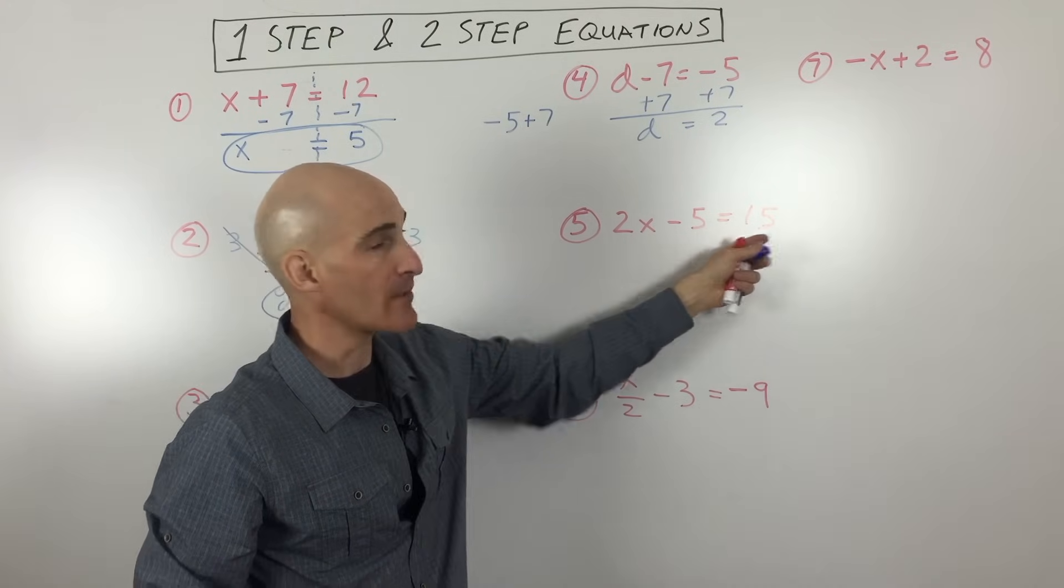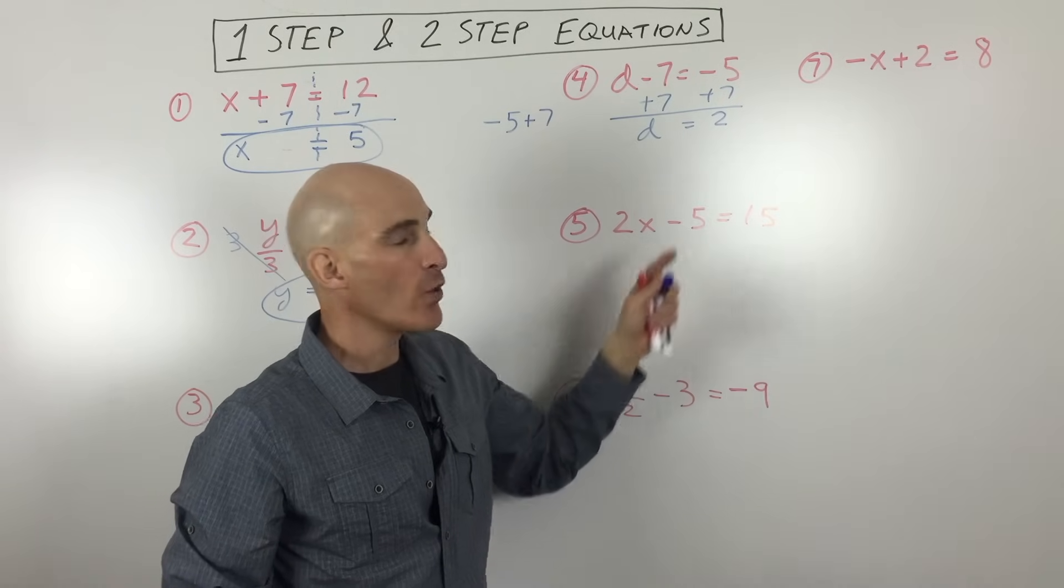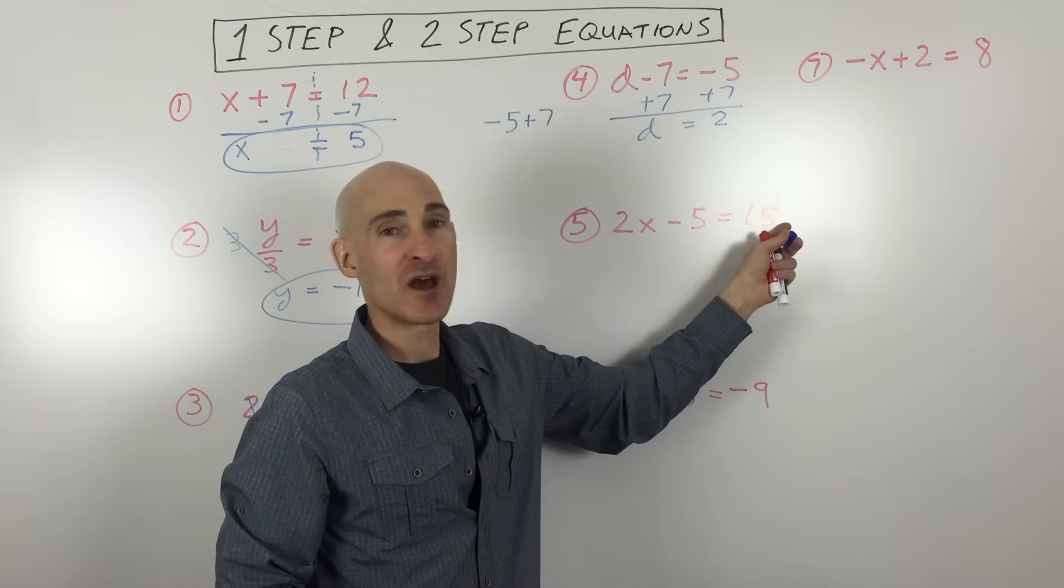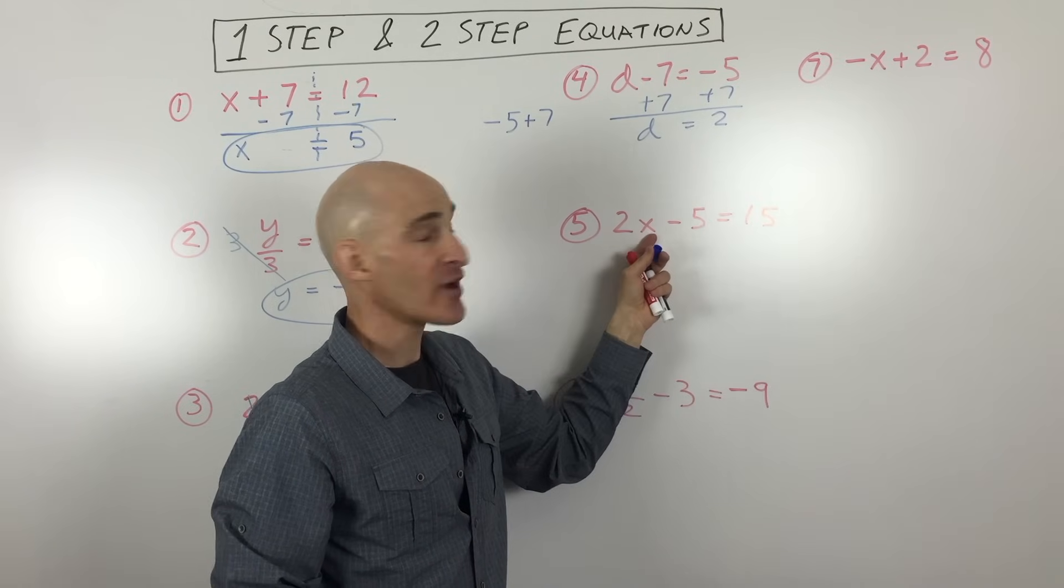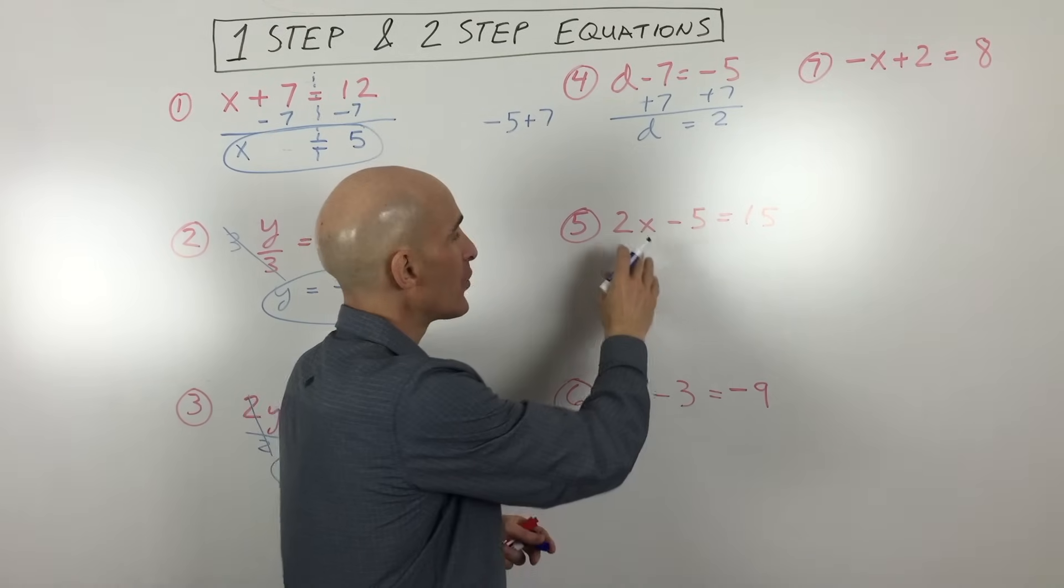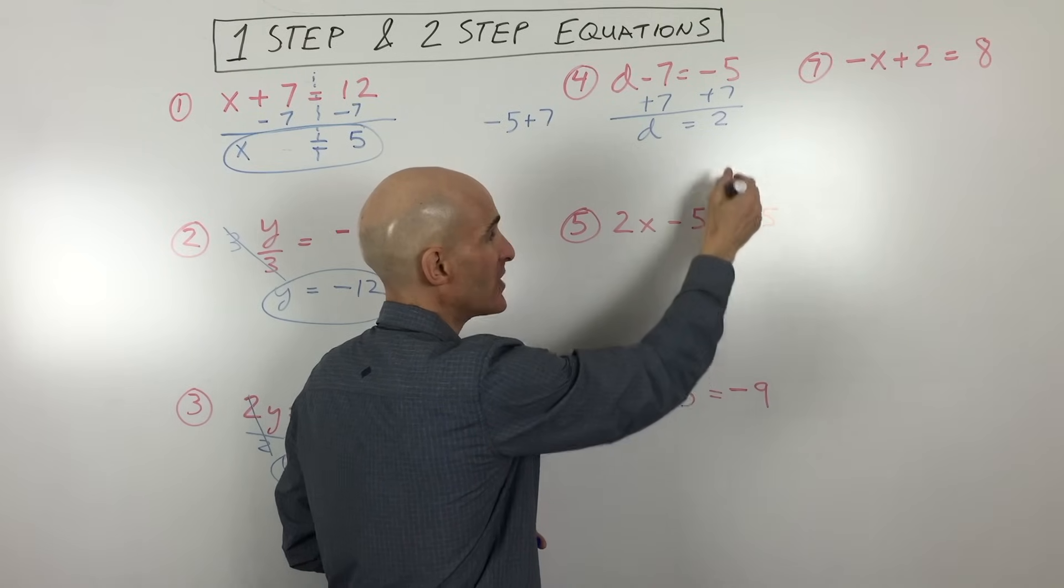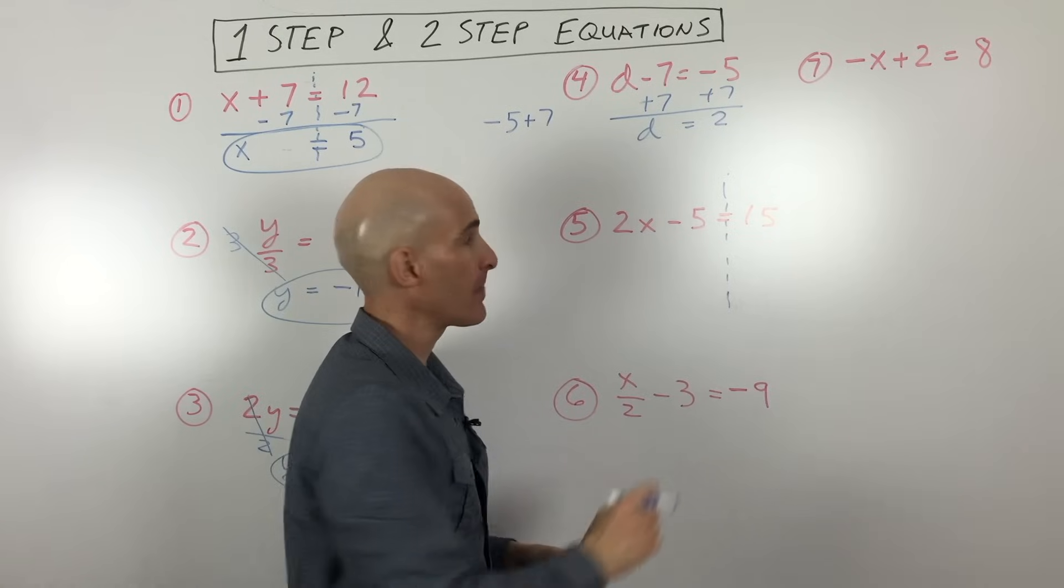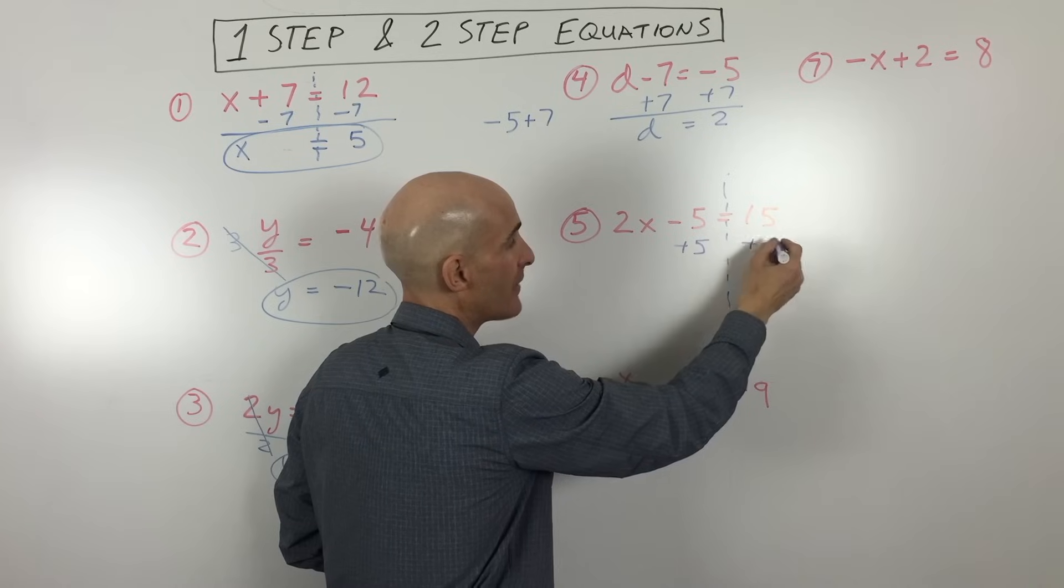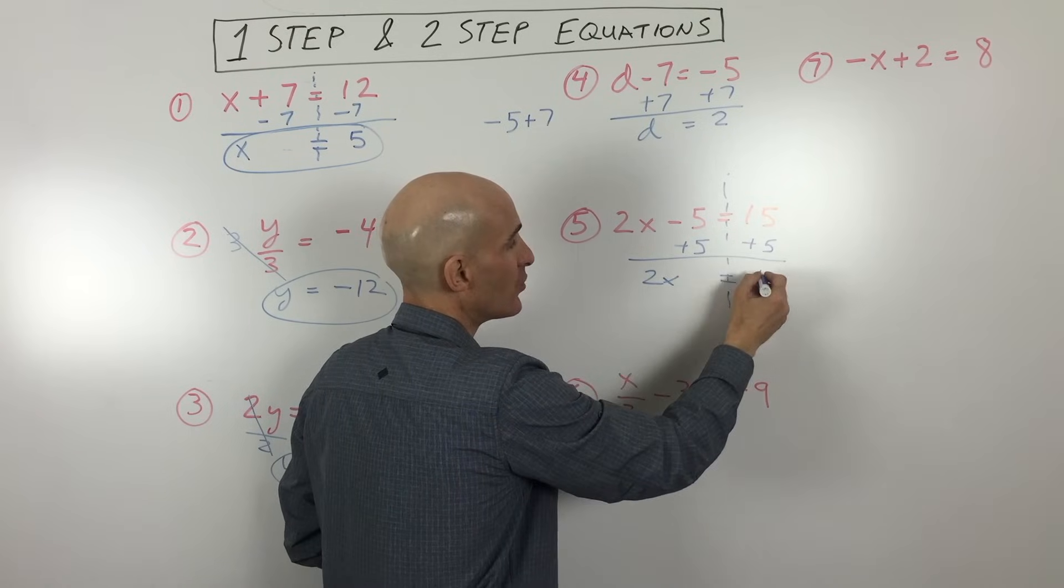This one here now, we're getting into two-step equations. So these next three examples, two-step equations. What you want to think about doing when you do two-step equations is you want to get the numbers on one side, you want to get the variables or the letters on the opposite side. So you're trying to separate them. So here we have 2x and negative 5. I'm going to get the numbers on the right side of the equation. So you can think of that dividing line. To get rid of this negative 5, I'm going to do the opposite of subtracting 5. I'm going to add 5 to both sides. So that gives us 2x equals 20.